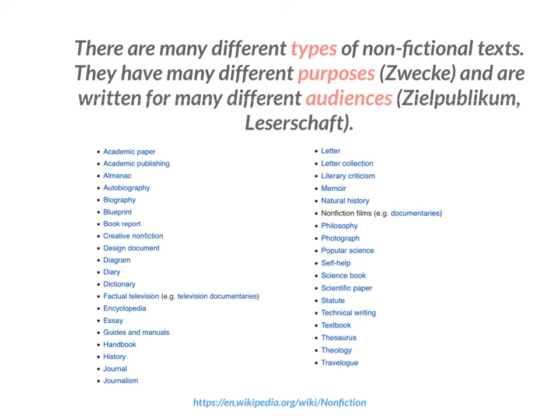Here you can see a list of different types of non-fictional texts. I copied this list from Wikipedia. You can have a look at it. You see things like book report, diary, science book, scientific papers, autobiographies, letters, and so on.